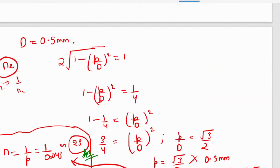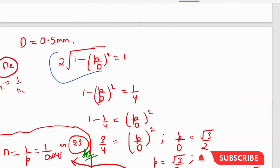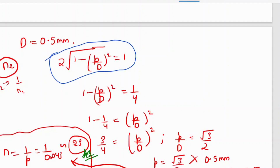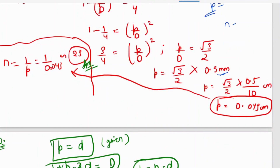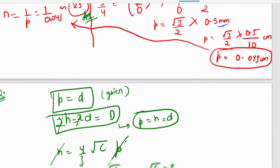If the question states it is a square jammed fabric, the formula 2√(1 - p/d)² = 1 is used. Solving, p/d = √3/2. If the fabric yarn diameter is given as 0.5 mm, you calculate the value of p in mm or cm, and then calculate n (ends per unit length) as n = 1/p.